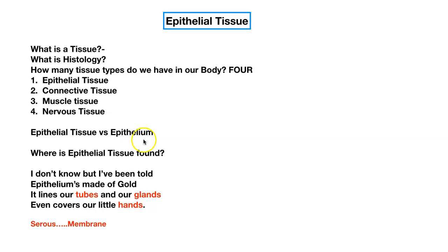Where is epithelial tissue found? This you must know — if you're going to be taking any TEAS exam or go into nursing, you must know about epithelial tissue. It is found in every single tube of your body. Any tube going in or out of your body is lined with epithelial tissue. Starting with your mouth, through the esophagus, stomach, small intestines, large intestines, all the way to the anus — that is one big tube, and it is entirely lined with epithelial tissue.